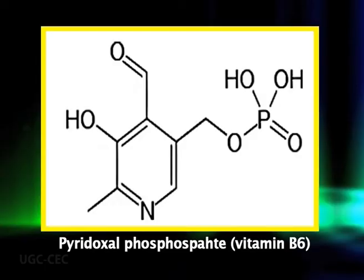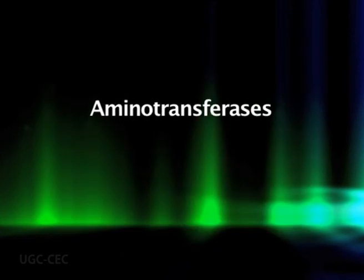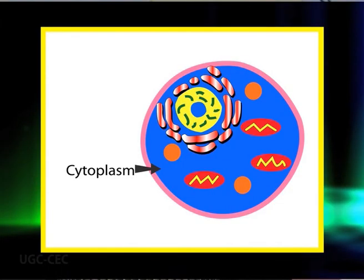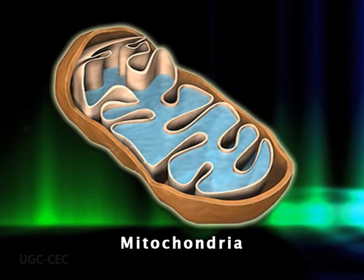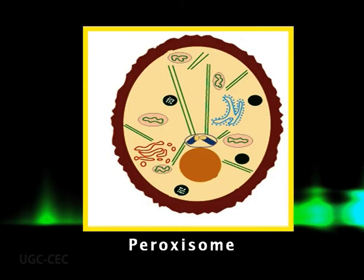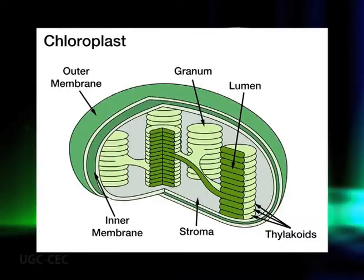All transamination reactions require pyridoxal phosphate (vitamin B6) as a cofactor. The enzymes that catalyze these reactions are known as aminotransferases. Aminotransferases are found in the cytoplasm, chloroplasts, mitochondria, glyoxysomes, and peroxisomes. The aminotransferases localized in the chloroplasts have a significant role to play in amino acid synthesis.